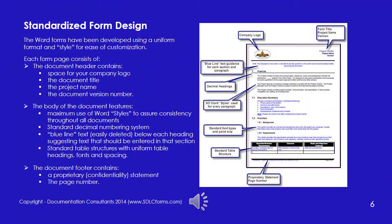To simplify your task of quickly integrating SDLC forms into your SDLC process, we've used a standardized style in all of the Word forms, which are the majority of the forms in our packages. Each form page consists of standardized headers, body of the document, and footers. The header contains space for your company logo, the document title, project name, and a version number. The body contains uniform paragraph styles, a decimal paragraph numbering system, blue line text to suggest entries in each section, and standard table structures with uniform headings, fonts, and spacing. The footers contain a proprietary or confidentiality statement and the page number to make it easy for you to customize any document to your specific needs.